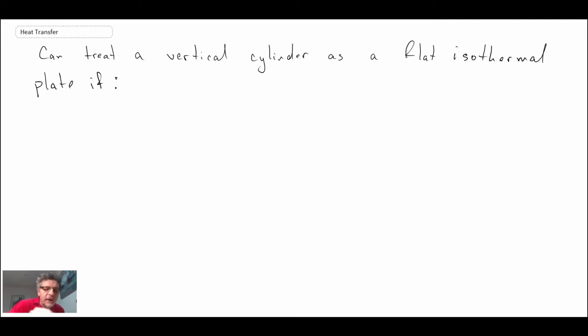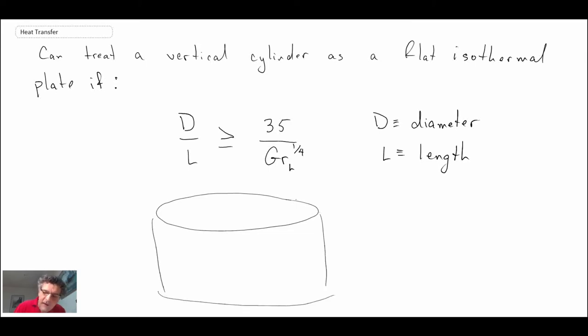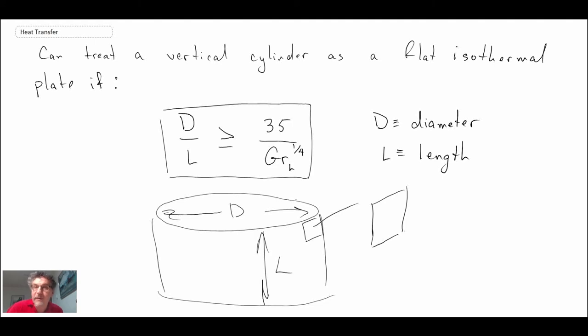We can treat a vertical cylinder as a flat isothermal plate if the ratio of the diameter to the length of that cylinder satisfies this relationship: D/L is greater than or equal to 35/Gr_L to the one-fourth. If you have a very large cylinder and this requirement is satisfied, we can basically approximate the boundary layer as being that just over a plain flat plate and consequently use the flat plate relationship. Essentially, the curvature would have to be not that significant for the cylinder that we're looking at.